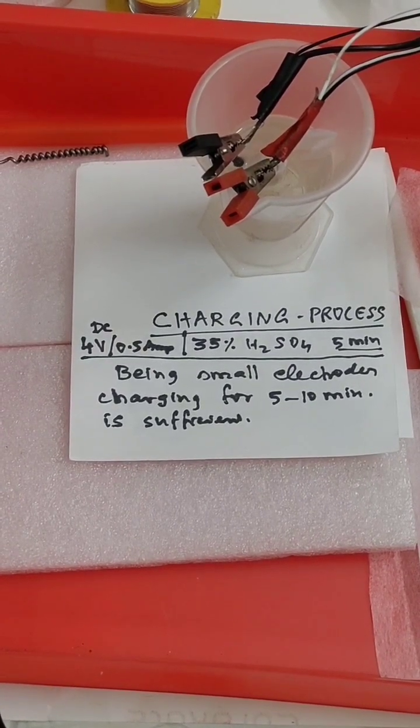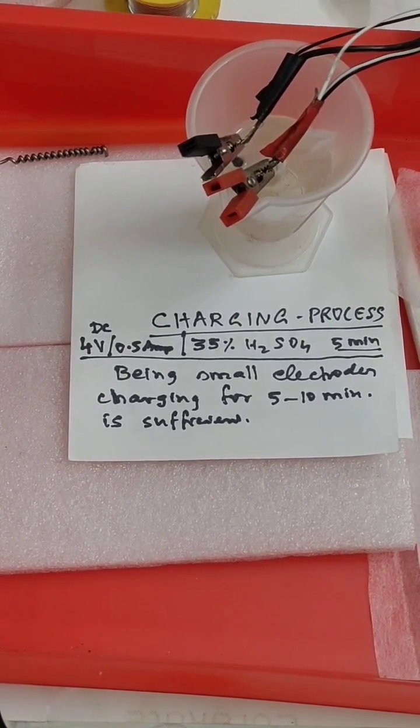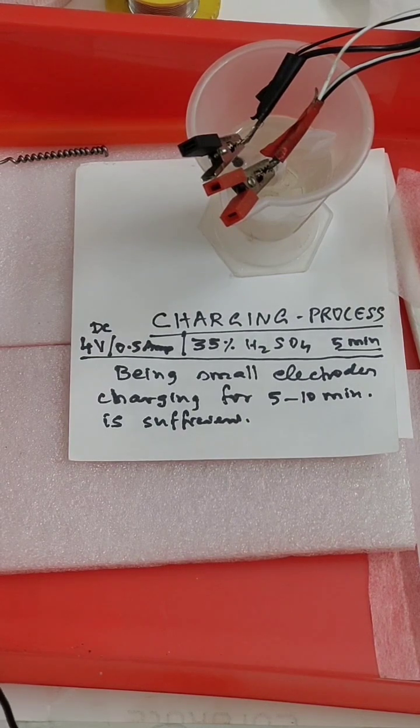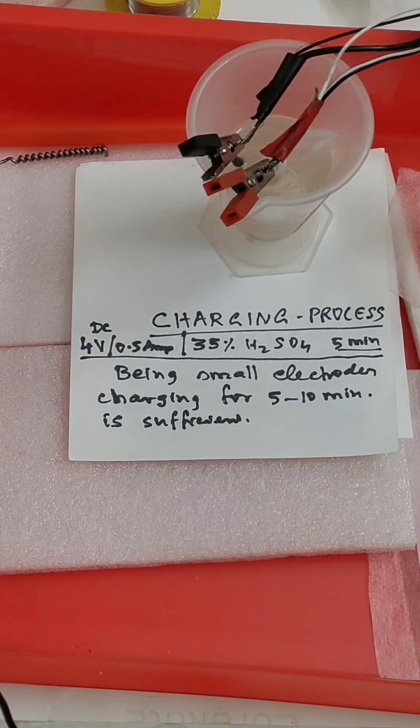Finally I am giving charging for 5 minutes using not 35% sulfuric acid. I am using only 30% because this is a very smallest battery, so I don't want to put very concentrated sulfuric acid, so I am using only 25% sulfuric acid here for 5 minutes I am charging.